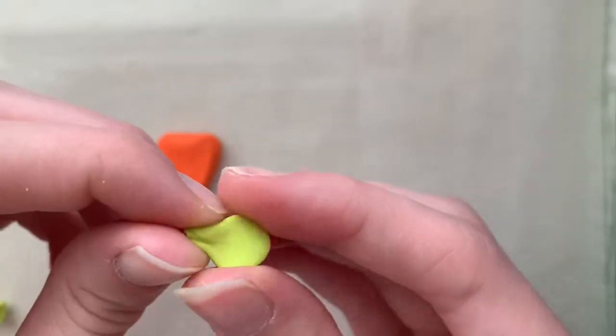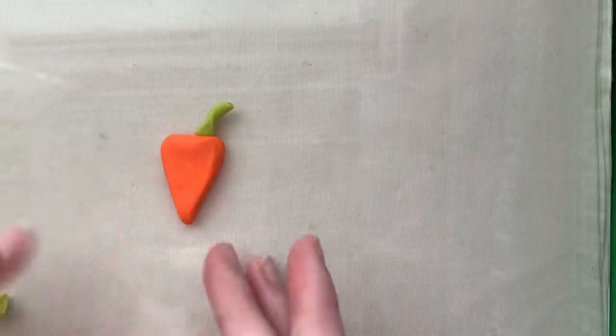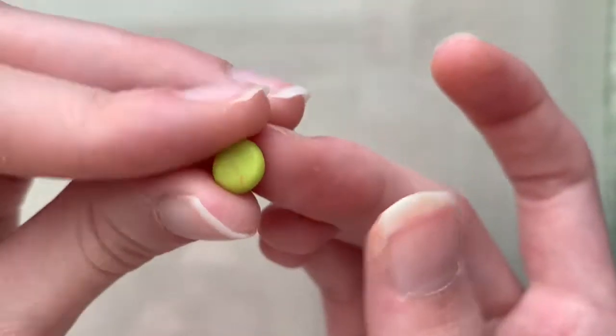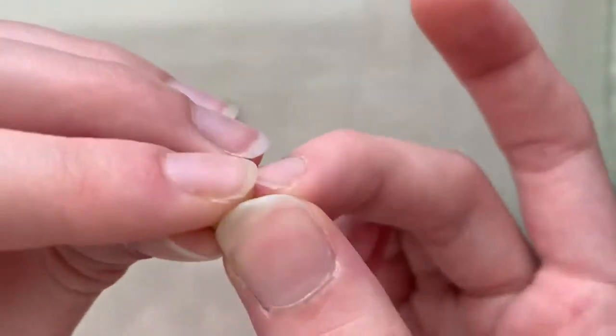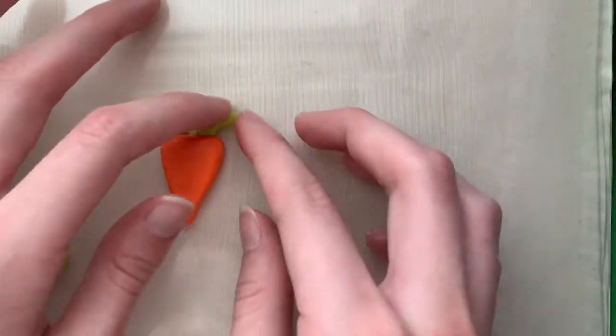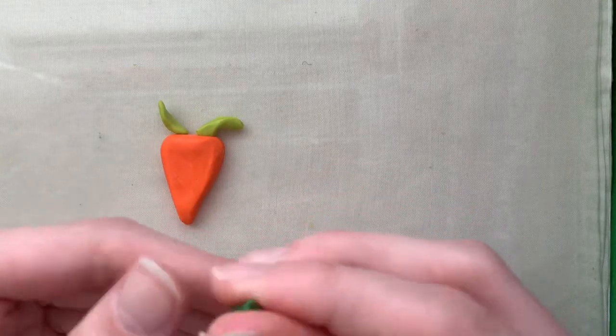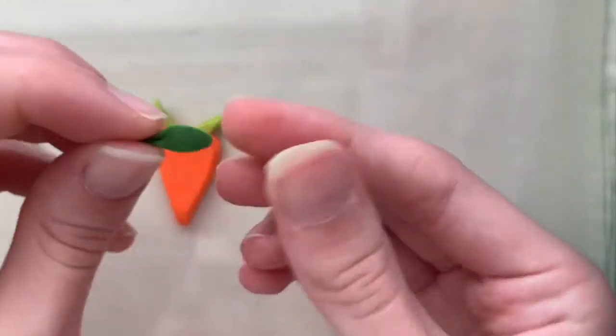Now for the leaves, I'm getting light green and I'm just making a leaf shape. It doesn't have to be exactly like this. I just got a ball and pressed it down and then I kind of pointed one edge and folded the sides down to make it a leaf shape, but you can do whatever you want. Now if you'd like, you can do the same with dark green.